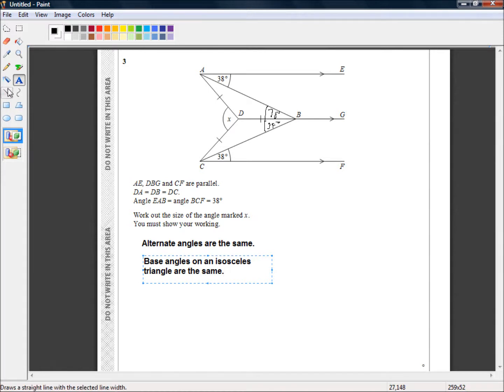Okay, so we have this angle here is 38 degrees because this is an isosceles triangle. And by the same reasoning, this angle here is 38 degrees, again, because this is an isosceles triangle. Okay, so we've got these.